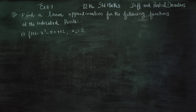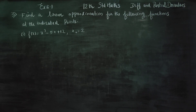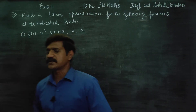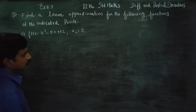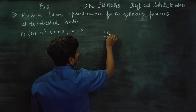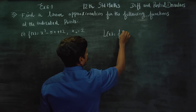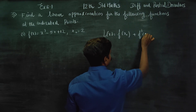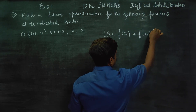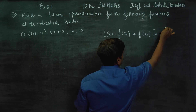Dear Tool Standard students, in Exercise number 8.1, Differentials and Partial Derivatives, find a linear approximation for the following functions at the indicated points. For f(x) = x³ - 5x + 2 at x₀ = 2. The linear approximation formula is: f(x) = f(x₀) + f'(x₀) · (x - x₀).